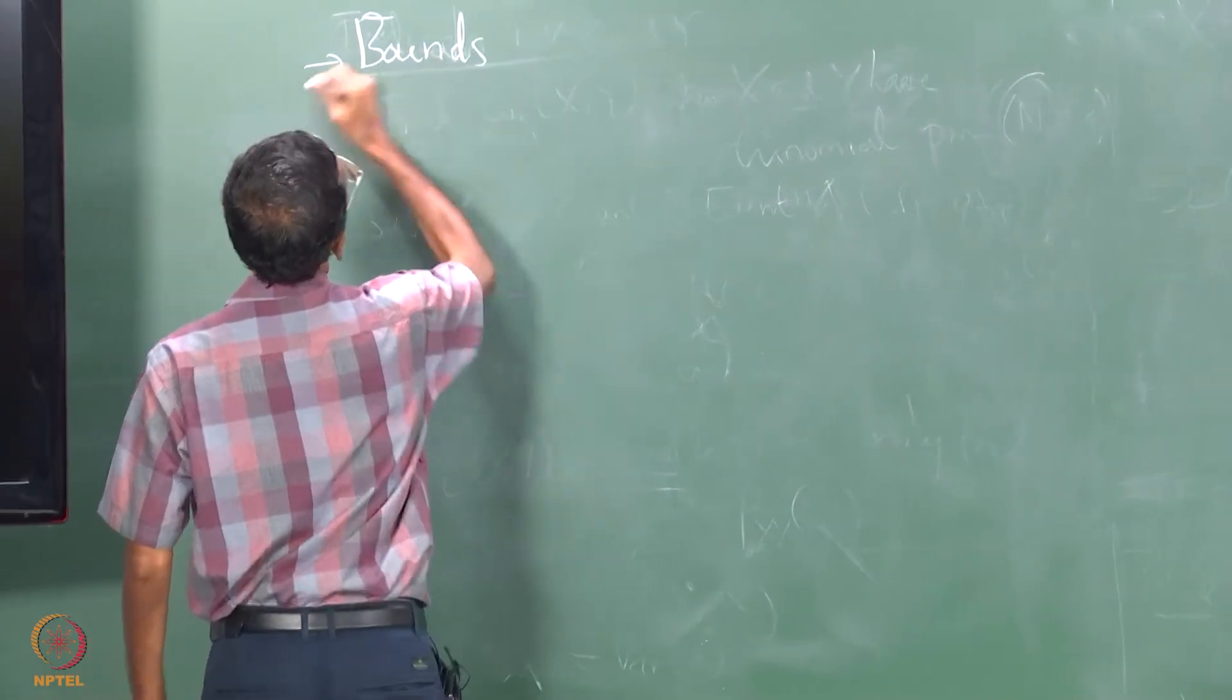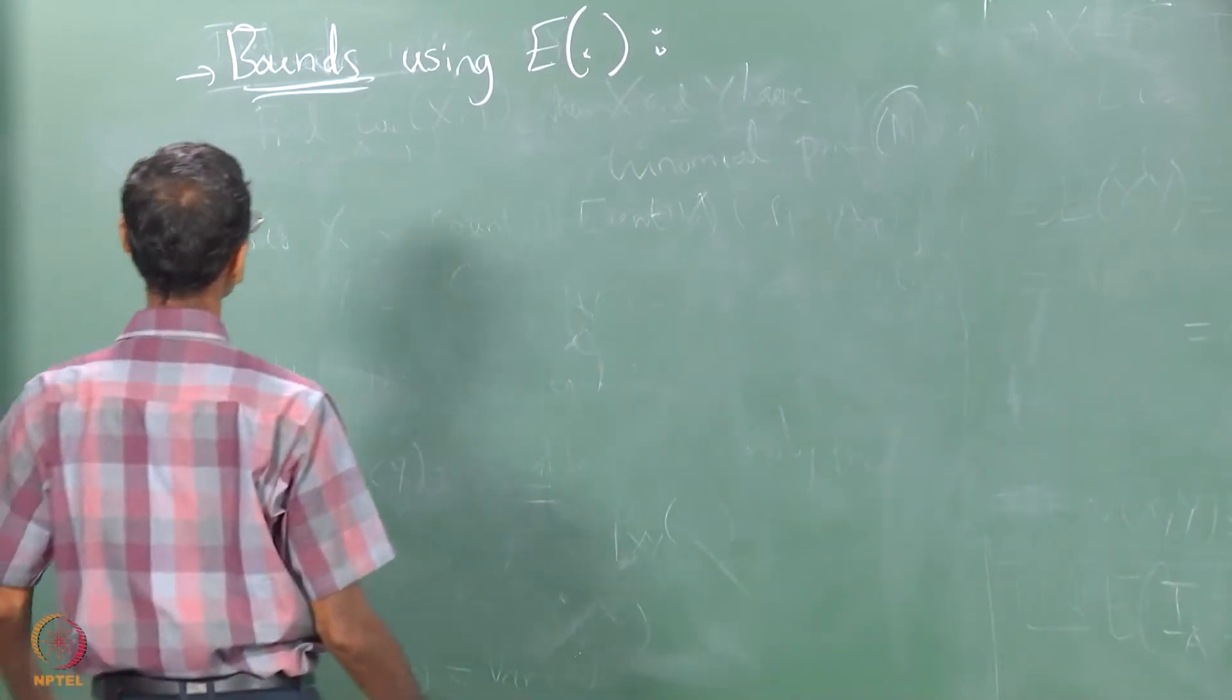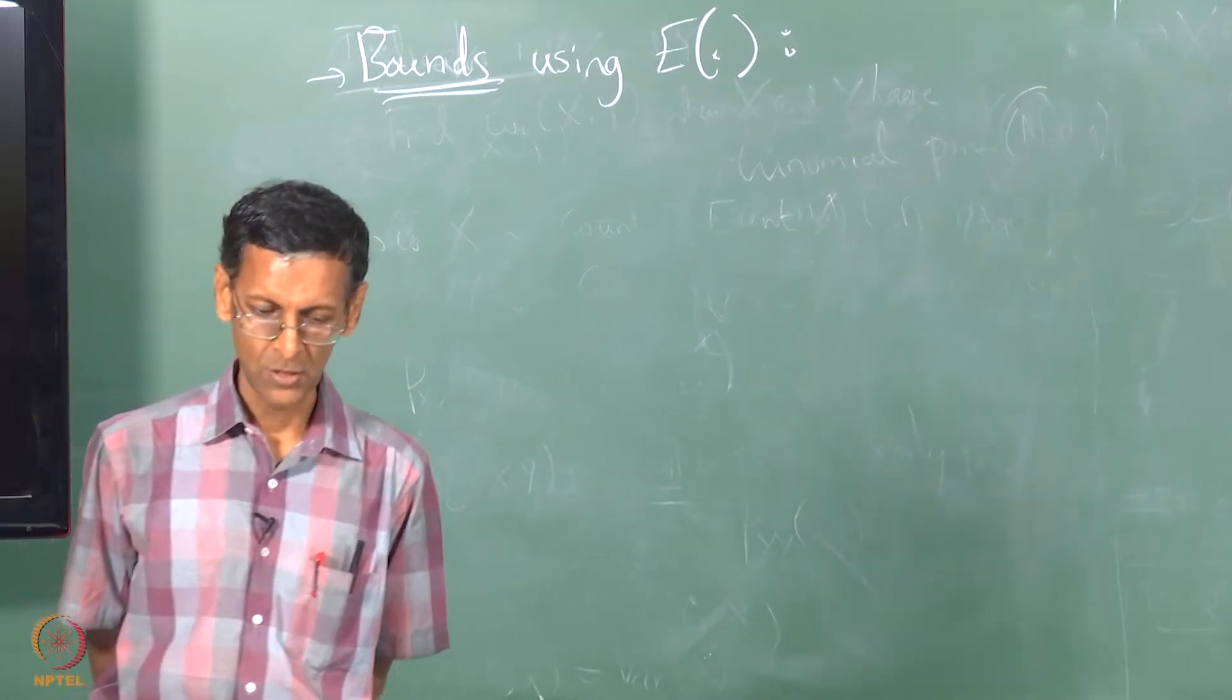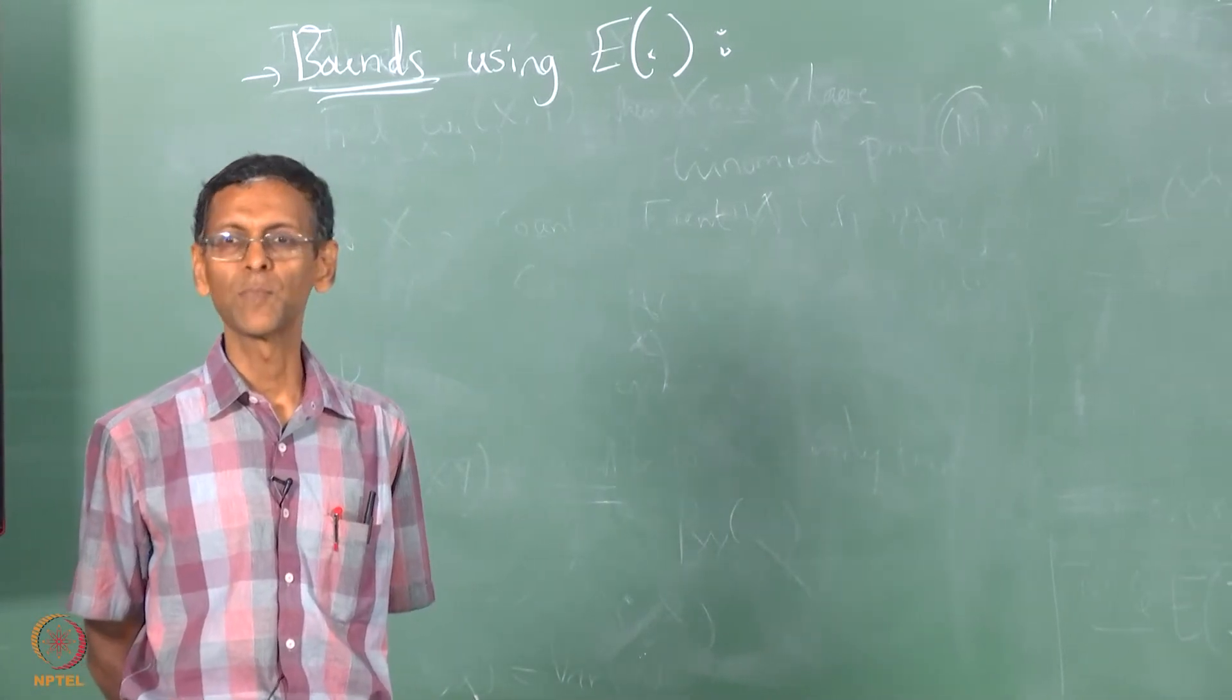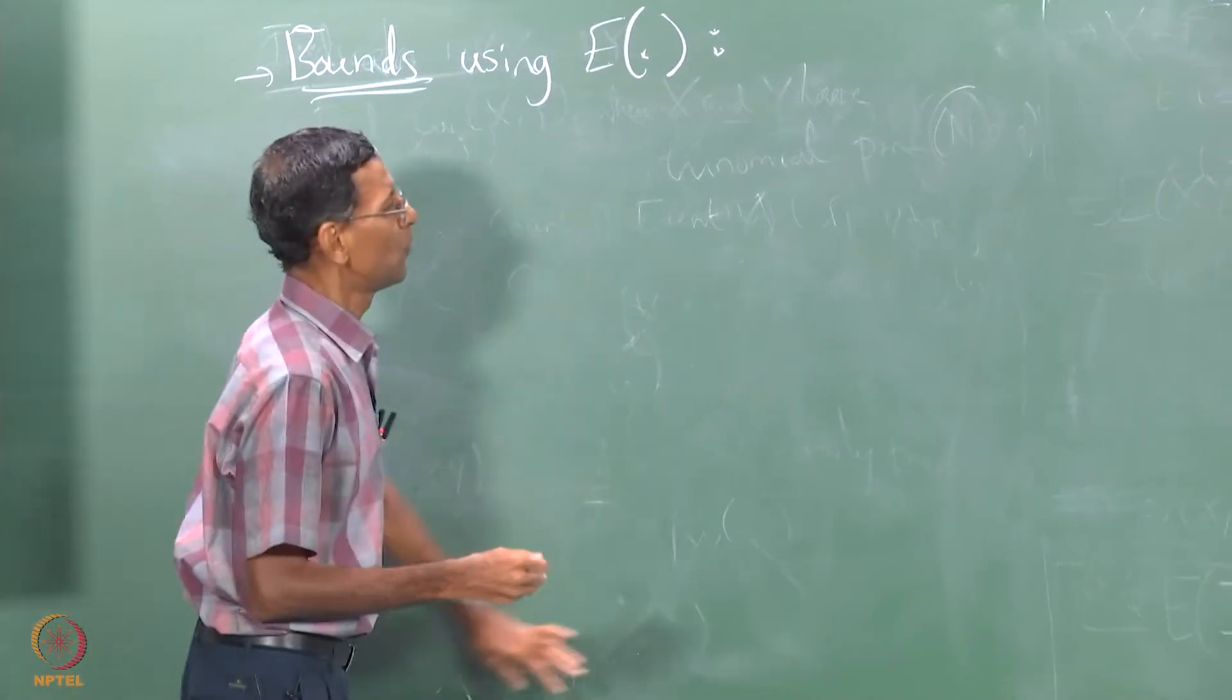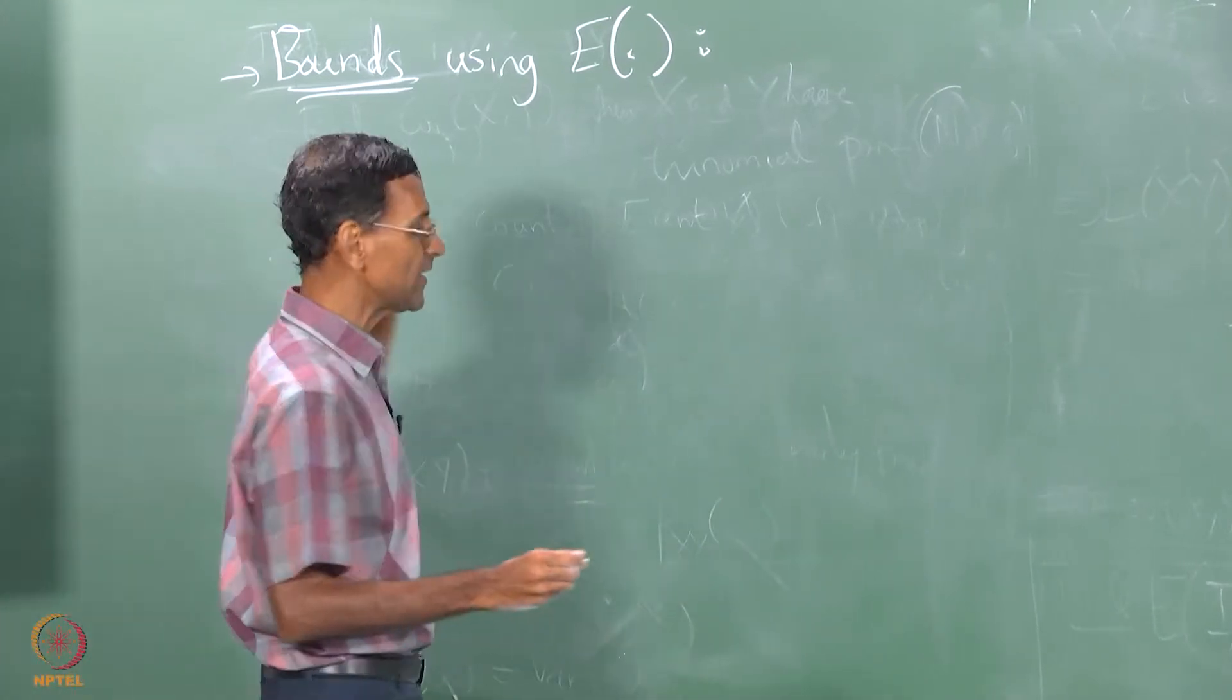So, Bounds. We are going to start this topic here and we will see how far we can get today. Expectation operator itself, we have already seen one or two bounds earlier when we first started listing the properties of expectation. It turns out there are a lot of interesting bounds you can write. These are all general inequalities. We are not going to make any assumptions other than the existence of the expectation itself, so it will not be specific to any distribution.